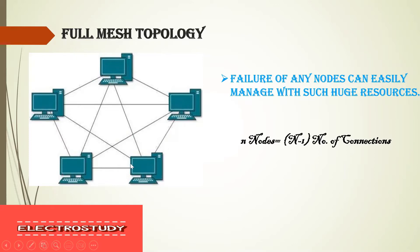With five nodes, the first node will have four connections — that is, n minus one equals five minus one equals four. Similarly, the second node will also have four connections. So if there is any failure in any of the nodes, it can be managed because the data can be sent through a different path. If the direct link fails, the data is transferred through an alternate node to reach the destination.